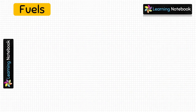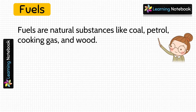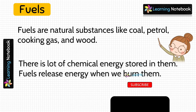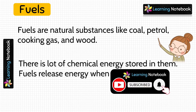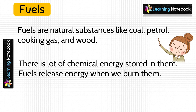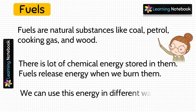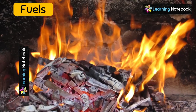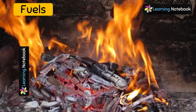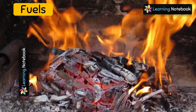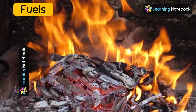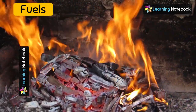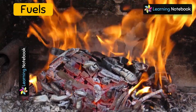The next energy source is fuels. Fuels are natural substances like coal, petrol, cooking gas, and wood. There is a lot of chemical energy stored in these fuels, and energy is released when we burn them. We can use this energy to produce electricity, to run our vehicles, to cook food, and more. For example, when we burn coal we get heat and light energy, which can be used to cook food, run trains, generate electricity, and for many other purposes.